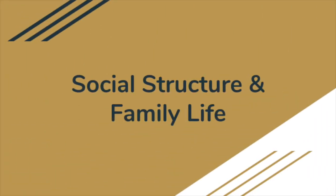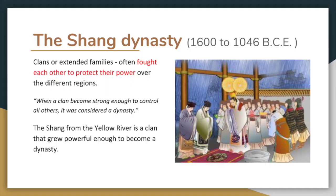Social structure and family life. The Shang dynasty existed from 1600 to 1046 BCE. Ancient China was controlled by clans, or extended families, that often fought each other to protect their power over different regions. When a clan became strong enough to control all others, it was considered a dynasty. The Shang from the region of the Yellow River is an example of a clan that grew powerful enough to become a dynasty.